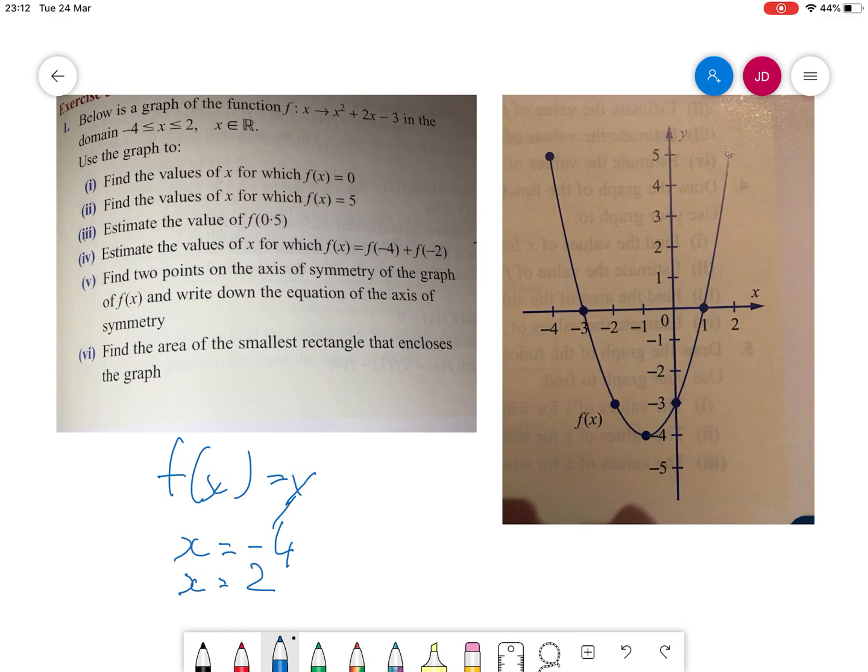So my two values for which f(x) equals 5 is x = -4 and x = 2.